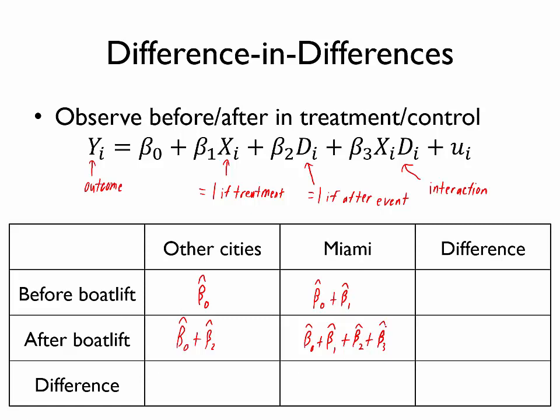Notice we can also calculate a variety of differences. So for example, in other cities, if I wanted to know what is the difference in average wages after versus before the boat lift, I would just subtract and I would get β̂₂. I could do the same thing in Miami.